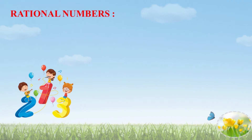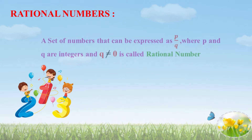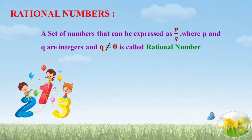Before going to the topic, let me explain what is a Rational Number. A set of numbers that can be expressed as P by Q, where P and Q are integers and Q is not equal to 0, is called a Rational Number. Here, P is the numerator and Q is the denominator. P and Q can take negative numbers as well as positive numbers, but the condition is Q is not equal to 0.